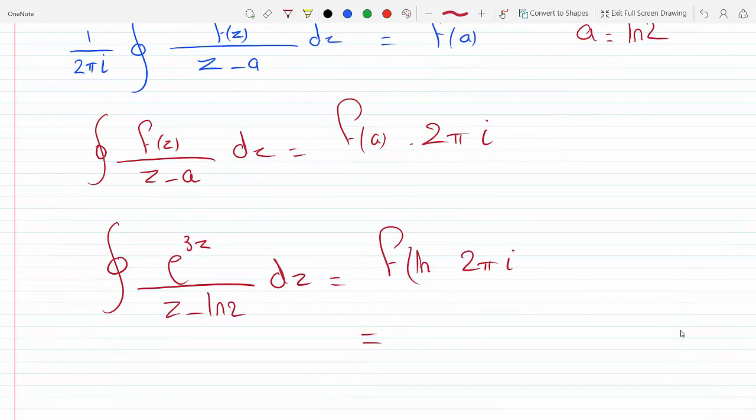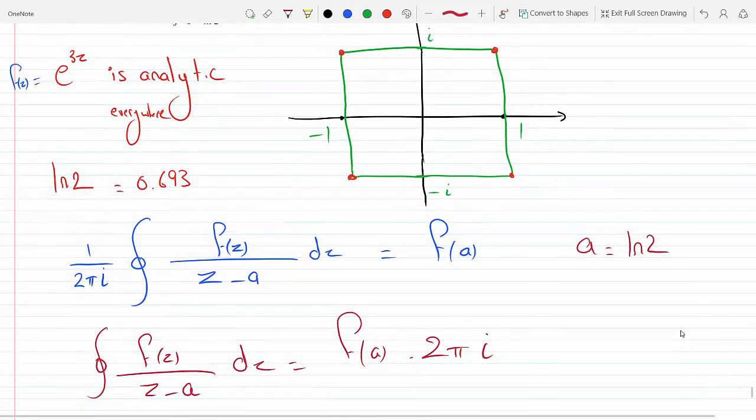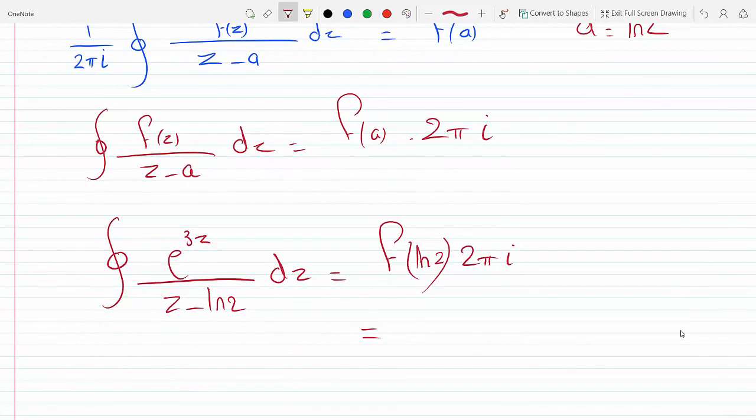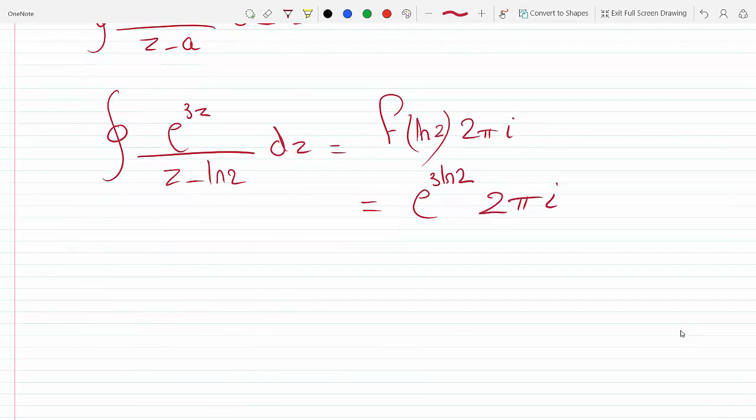So this becomes e^(3ln2) times 2πi. And what's e^(3ln2)? Well this is the same thing as e^(ln2³) times 2πi. So this is the same thing as 2³ times 2πi, because e^(ln2³) is 2³.